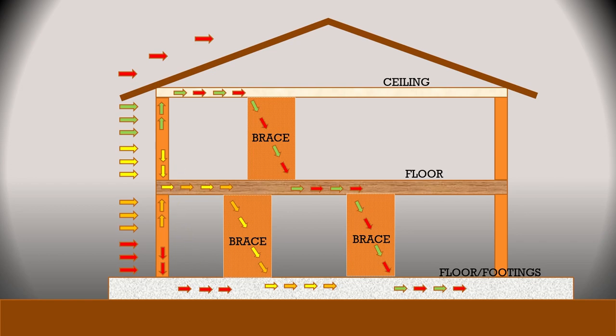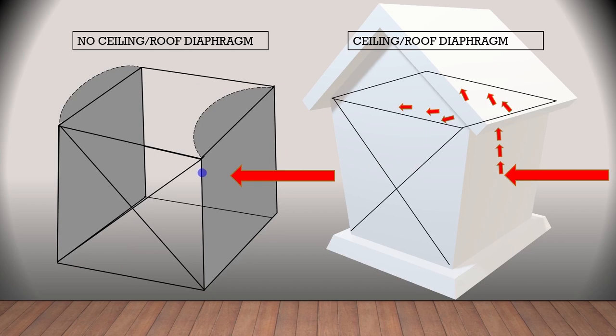To illustrate this explanation better and reinforce how important the diaphragm system is, have a look at the image on the right hand side. Here we're able to visualize how the ceiling will distribute the wind loads carried from the wall to the bracings.